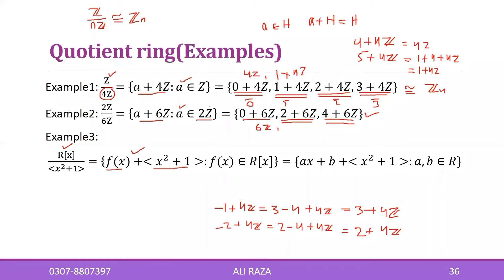Also note: Z is an infinite set, and 4Z — all integral multiples of four — is also infinite. So you took the quotient ring of one infinite set by another infinite set, but the result is a finite set.